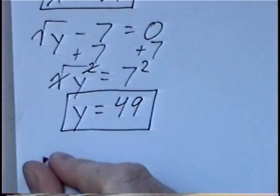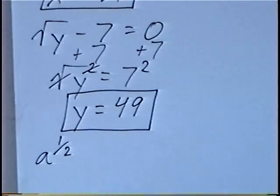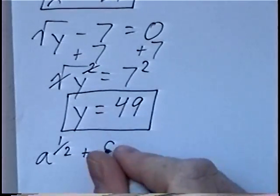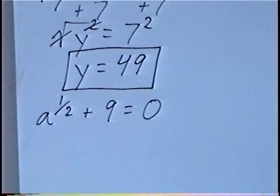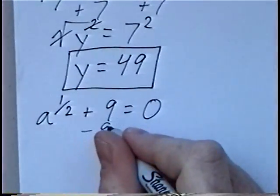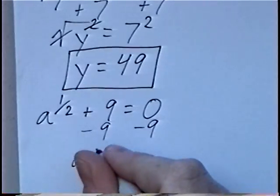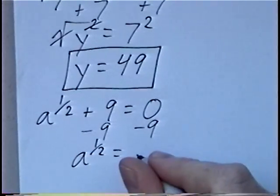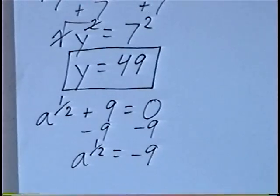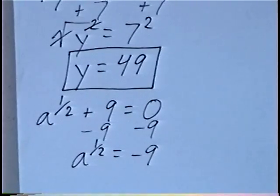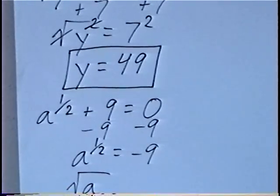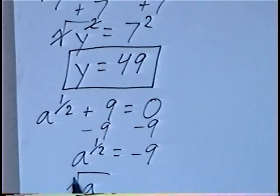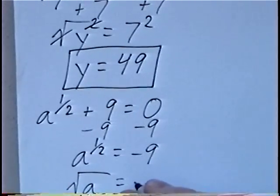Last question for the section: a to the exponent of 1/2 plus 9 equals 0. Solving first to get a by itself, we subtract 9 on both sides. So we'll have a to the 1/2 power equals negative 9. The 1/2 power can be rewritten as a radical — a is the base inside the radical, the numerator 1 is the exponent, and the 2 is on the outside — which is the same as the square root, equals negative 9.